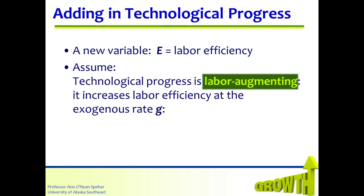Adding in technological progress will require a new variable. Let's call it capital E, and it will represent the efficiency of labor, or labor efficiency. We're going to assume that technological progress takes the form of augmenting labor — that is, it makes labor more efficient and increases labor efficiency at the exogenous rate G. Our exogenous rate G is going to be equal to the change in E divided by E.